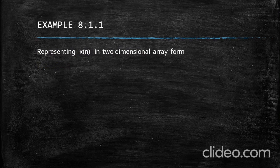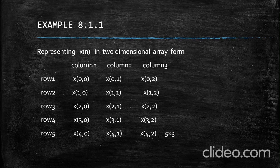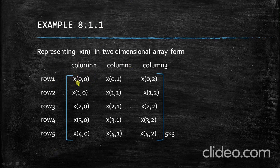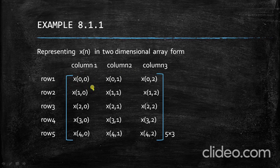The next step is to represent X of N in two-dimensional array form. As you can see, there are 5 rows and 3 columns. We represent X of L, M starting from row 0, 1, 2, 3, 4 and columns 0, 1, 2. So the element X(0,0) belongs to the 0th row and 0th column, and X(0,1) belongs to the 0th row and 1st column, and so on.